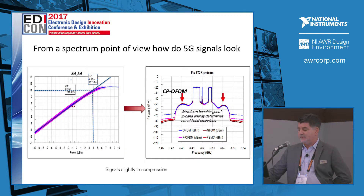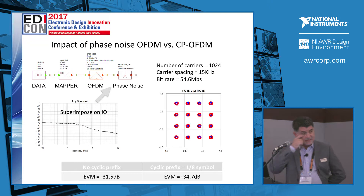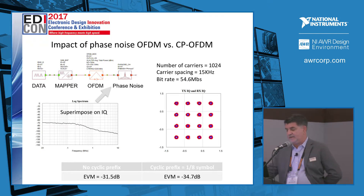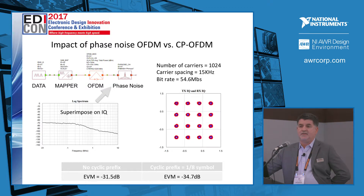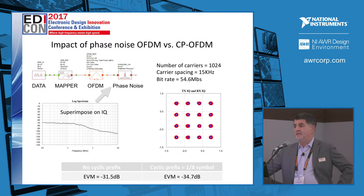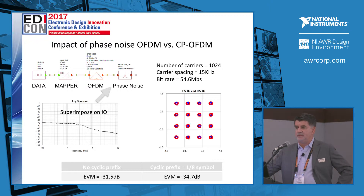If we look at the impact of phase noise on OFDM versus CP-OFDM, you can see there is an improvement in EVM when you add a cyclic prefix — in this instance a cyclic prefix of one-eighth of a symbol. In the prior simulation we had no cyclic prefix. Such simulations can be done in a proper simulation tool and applied to any standard where you can superimpose phase noise directly on a signal and look at a metric of your choice — in this case, error vector magnitude (EVM).